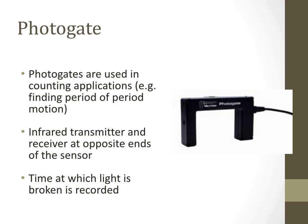Photo gate sensors are used in counting applications, with an infrared transmitter and receiver at opposite ends of the sensor. They count how many objects pass through — whenever something crosses the gate, the photo gate counts it.